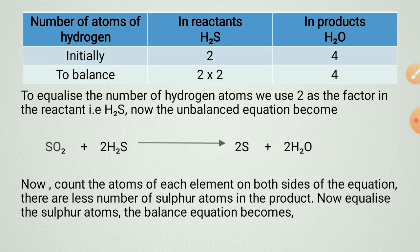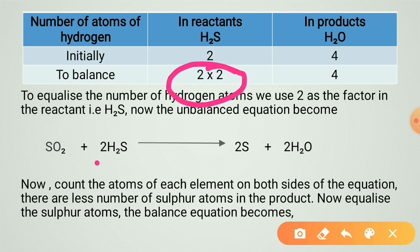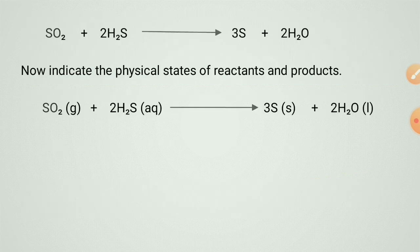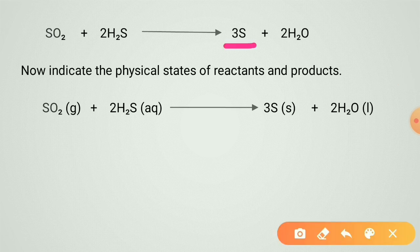On the reactant side take H₂S and on the product side take H₂O. Multiply H₂S by two on the reactant side so hydrogen becomes balanced. Now check both sides — hydrogen is balanced but sulfur is uneven again. To equalize sulfur, the equation becomes: SO₂ + 2H₂S, placing three on the sulfur side, plus 2H₂O.